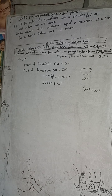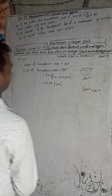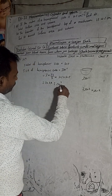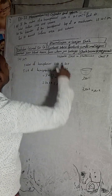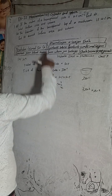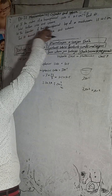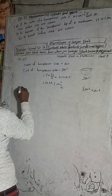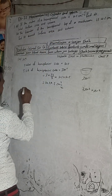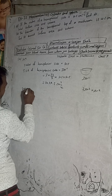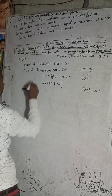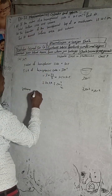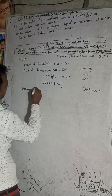Sorry, that was only the total surface area. Now I also have to find the volume. So the volume of the hemisphere: